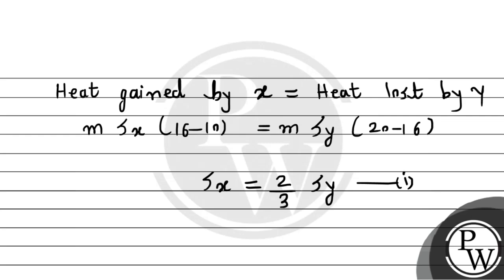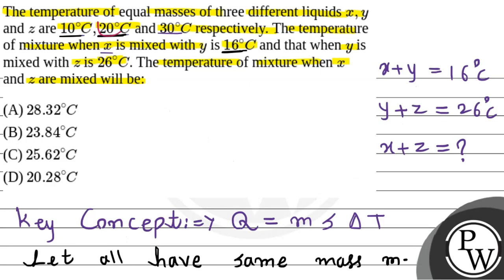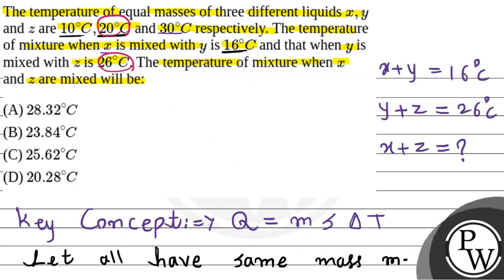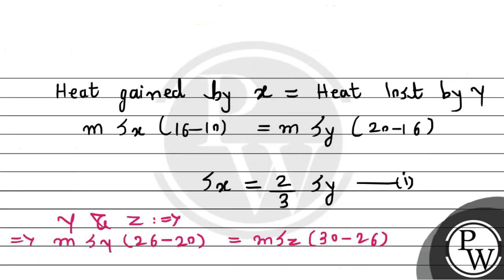Similarly, if we take the liquid Y and Z relation, now we take Y and Z relation. So this will be M, S of Y, final temperature 26 minus initial 20, because for Y the temperature is 20 and the final temperature of this combination is 26. This will be equals to M, S of Z, 30 minus 26, because for Z the temperature is 30 degree Celsius and the final temperature of this combination is 26 degree Celsius.